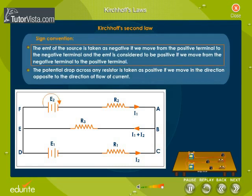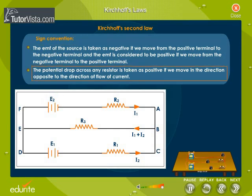According to the sign convention, the EMF of the source is taken as negative if we move from the positive terminal to the negative terminal, and the EMF is considered to be positive if we move from the negative terminal to the positive terminal. The potential drop across any resistor is taken as positive if we move in the direction opposite to the direction of flow of current, and vice versa.